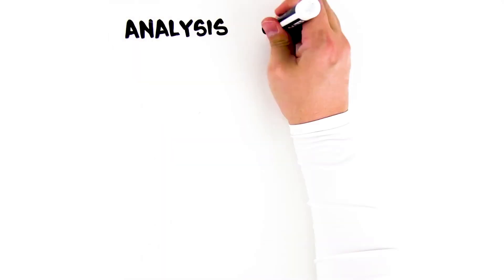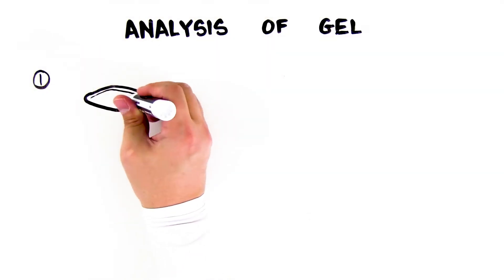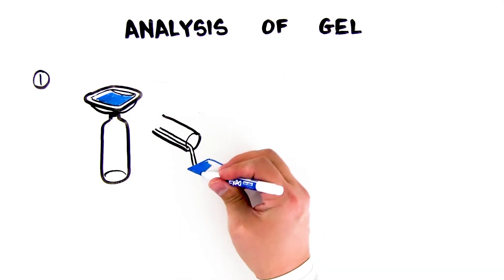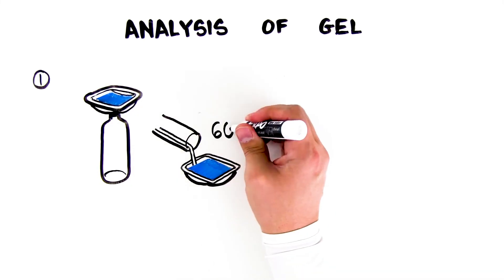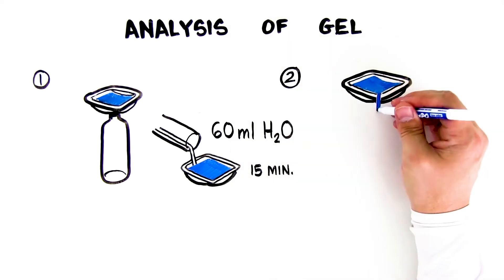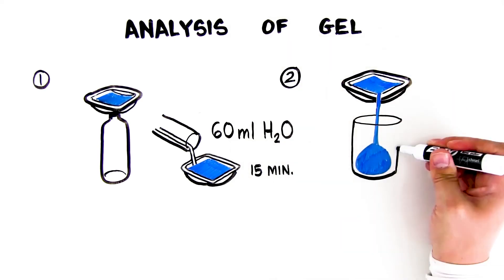Day 3. Analysis of the gel. First, pour off the DNA stain into a bottle. Add 60 milliliters of water to the gel and let the gel de-stain 15 minutes. Second, pour off the water into a waste beaker. Analyze the results with the help of your teacher.